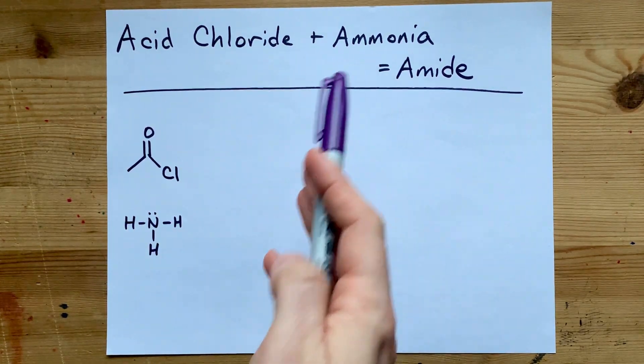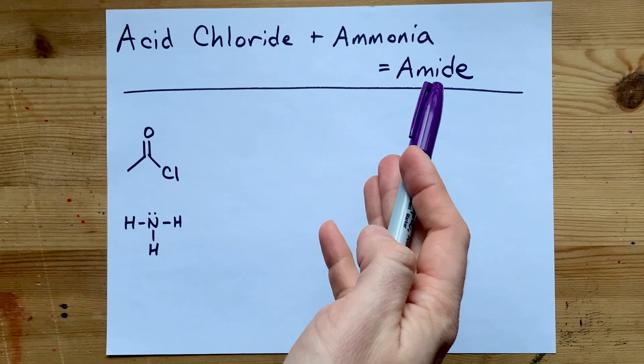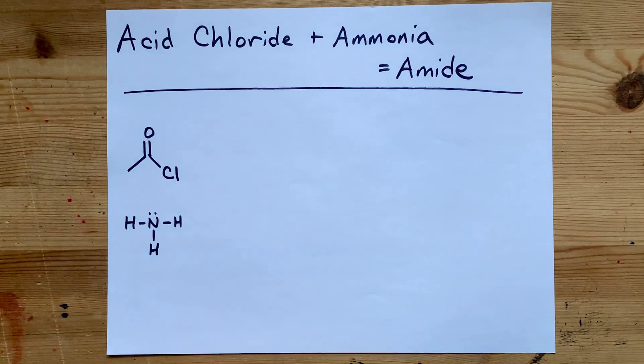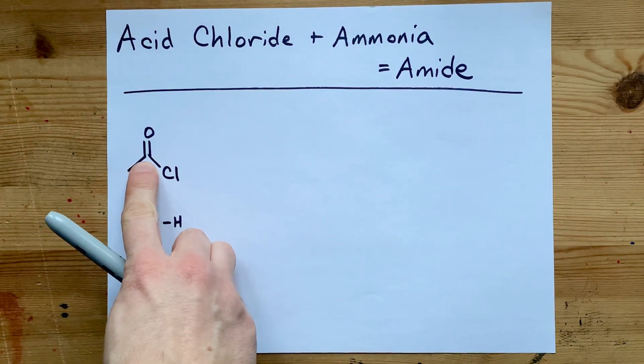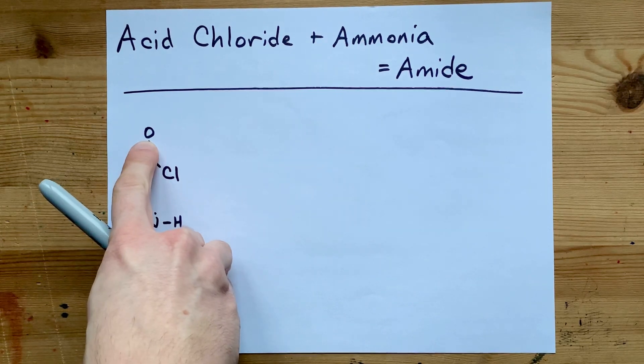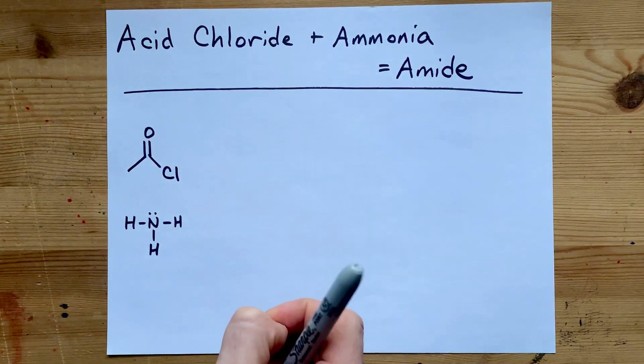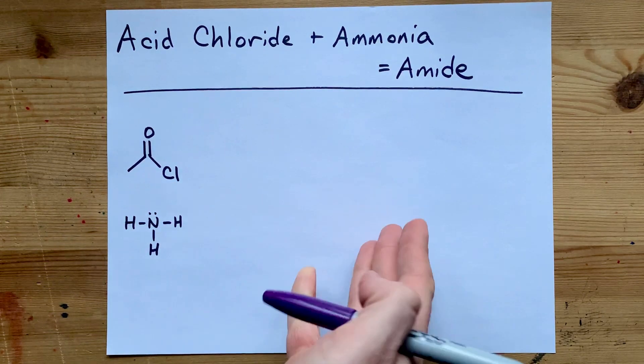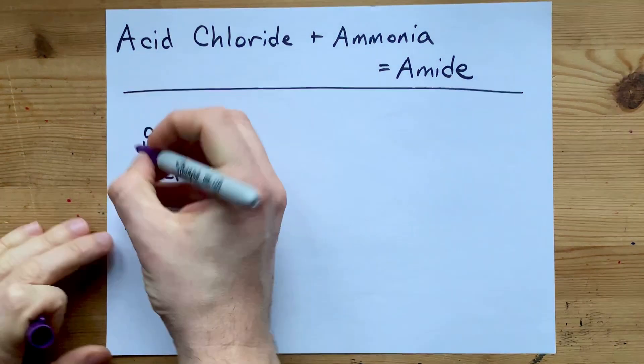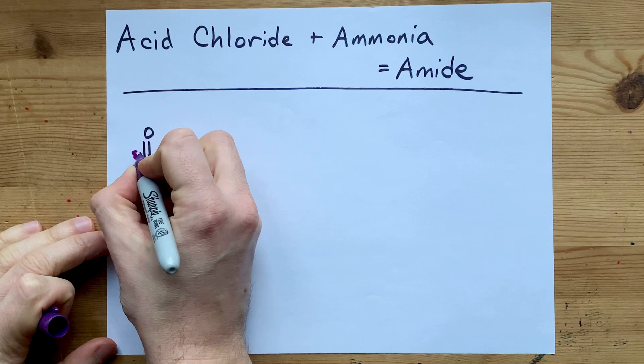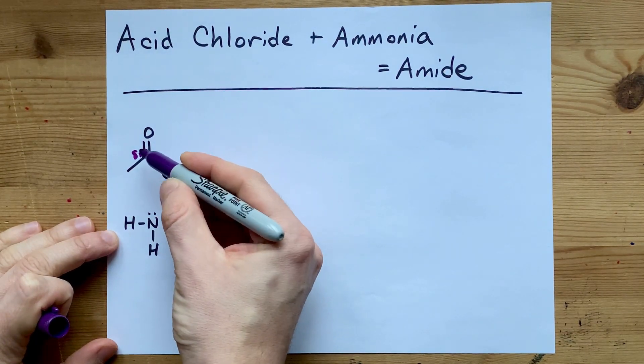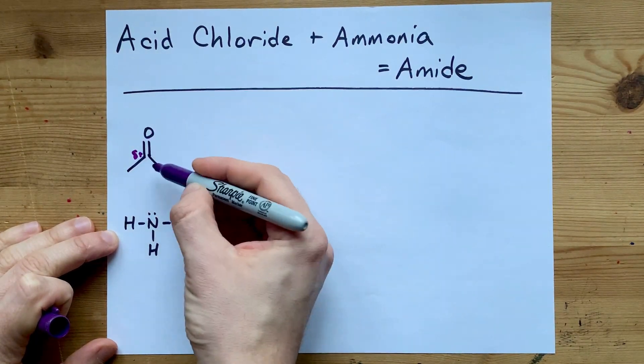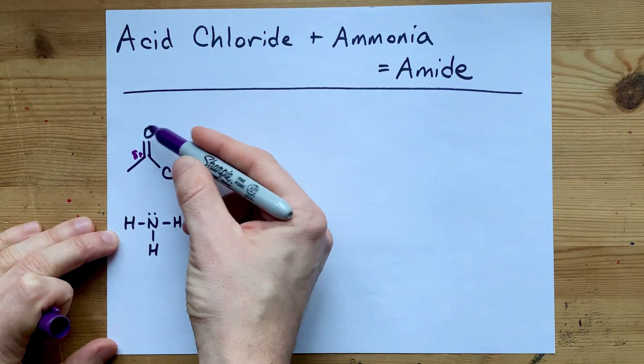Acid chlorides react with ammonia to produce amides. The carbon of an acid chloride is double bonded to oxygen, which is electronegative, and single bonded to chlorine, which is also electronegative. This means its partial charge is delta plus—the negative charge density from these bonds spends much more time near the oxygen or chlorine.